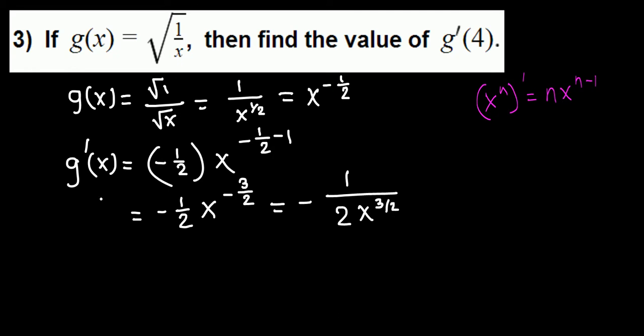But the question is to find g'(4). Then g'(4) is just replacing x by 4: negative 1 over 2 times 4 raised to 3/2.